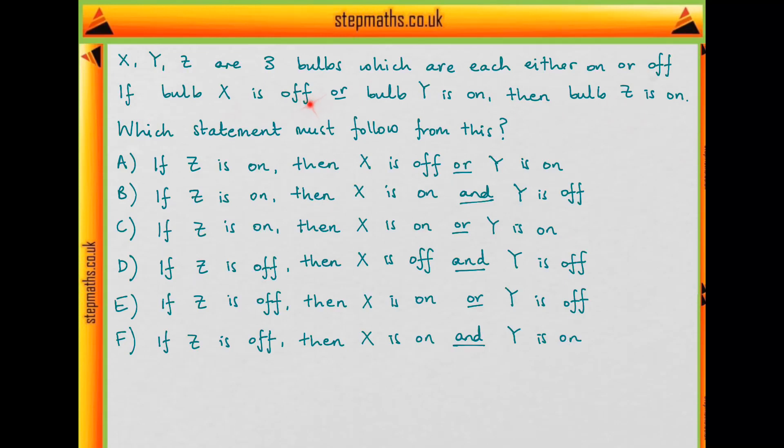So we have that X off or Y on implies that Z is on. But Z being on doesn't tell us anything about X or Y - the implication doesn't go the other way.